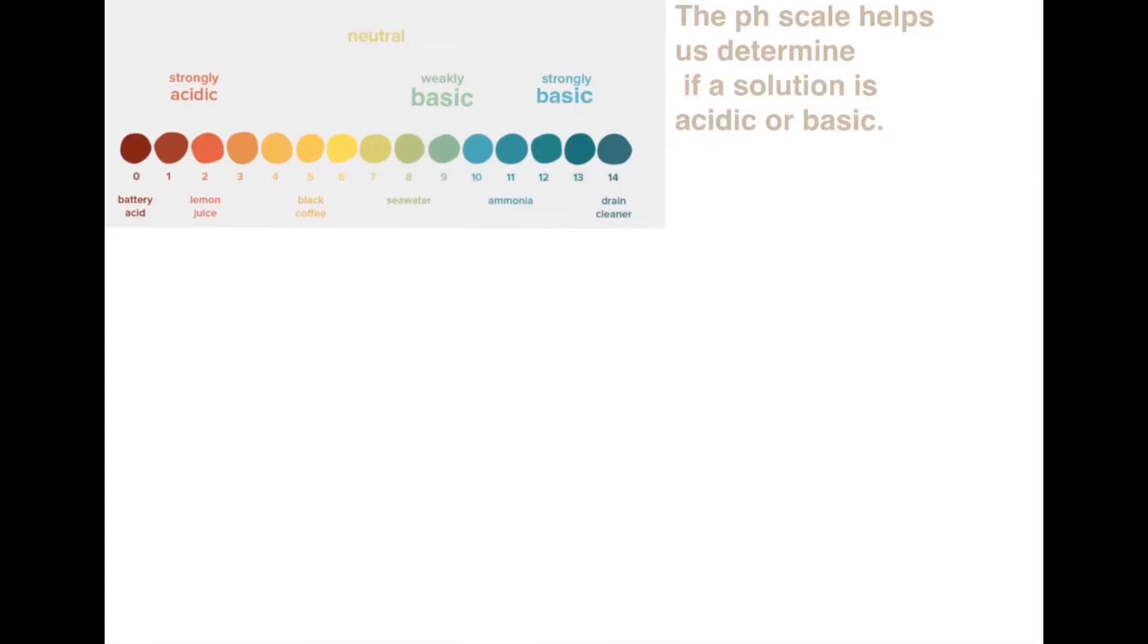The pH scale helps us determine if a solution is acidic or basic. To test the pH of a solution, we use indicators. The main indicator used is called the universal indicator. This is what we use in this mini simulation.